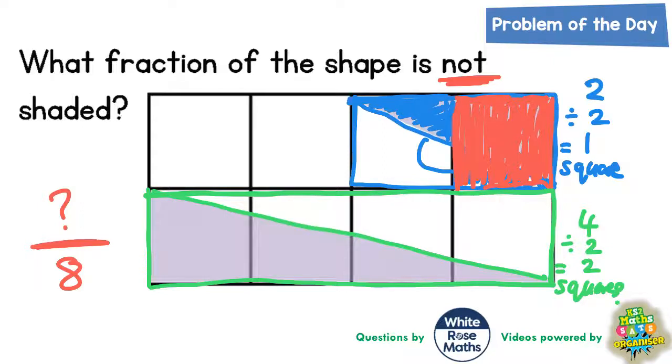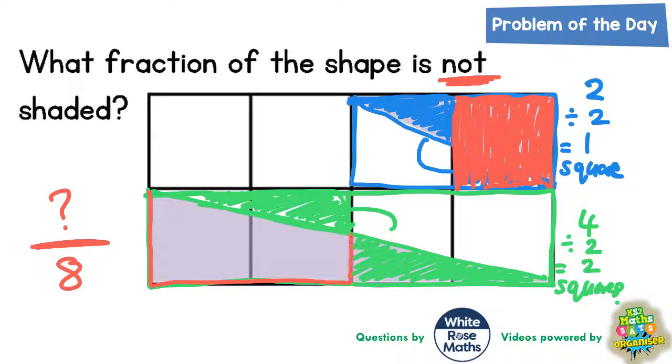Another way of thinking about that would be to shade in this bit here, or chop this bit off, turn it round and fit it into this white bit here and it would fit in exactly. So this green bit that I've just shaded in would fit into this area here and what you've got then is two whole squares.